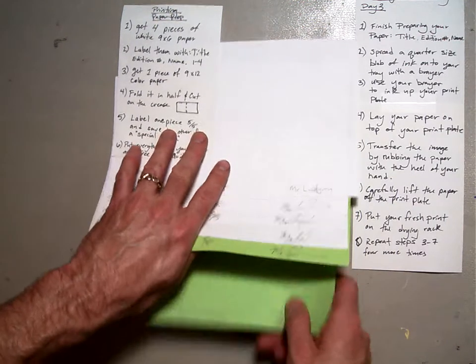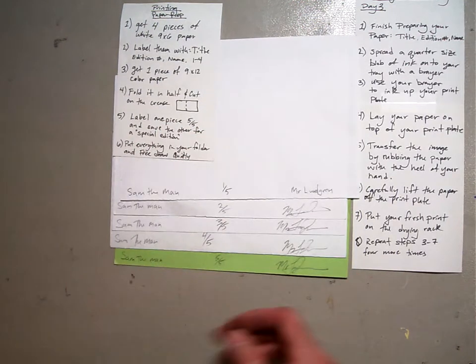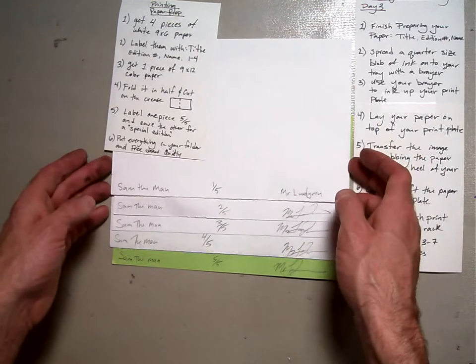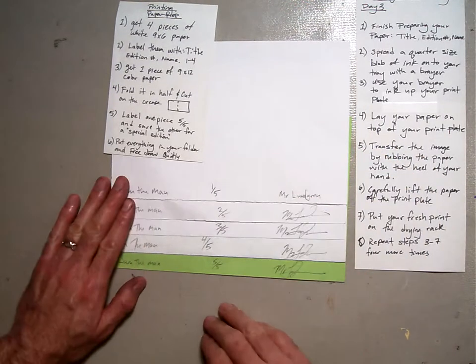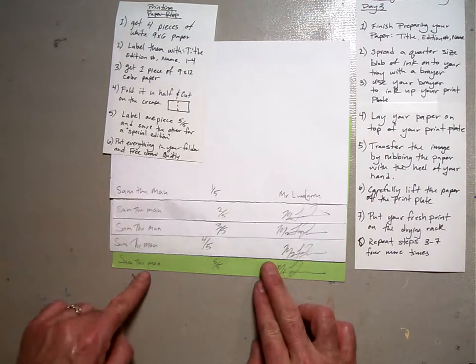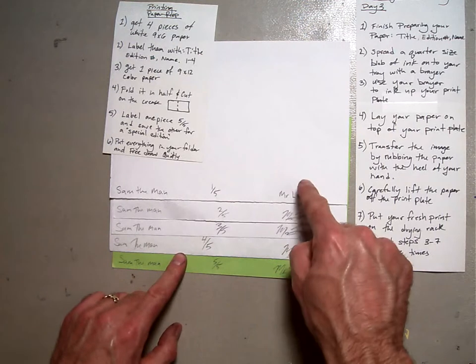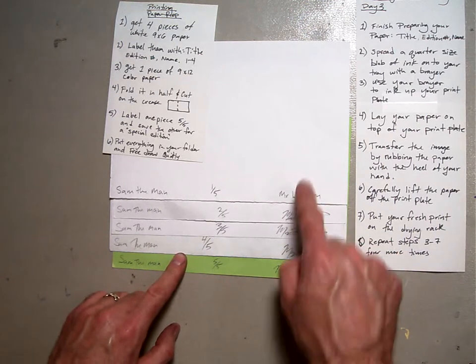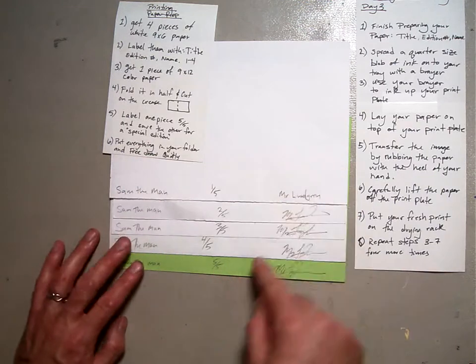So today, before we even get started with our ink and our printing and rolling the ink and all that, we're going to prepare our paper. It should look like this, title, edition numbers, name or signature. And you're going to have five pieces of paper.